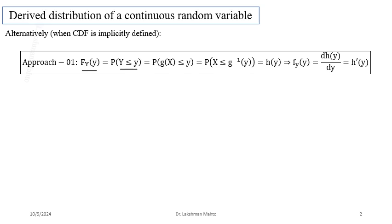The CDF of Y, F_Y(y), is defined as P(Y ≤ y). Since Y = G(X), we write P(G(X) ≤ y). Through the inverse map, this becomes the probability that X is observing a value in the inverse image of y — summing all probability mass of X that maps to y. If X is continuous, we compute this by integrating the density.